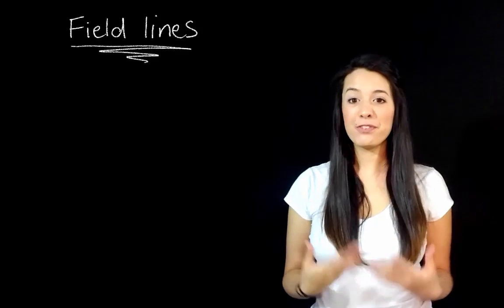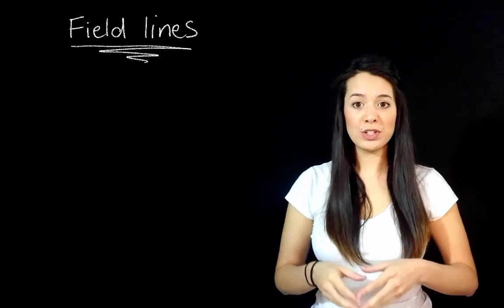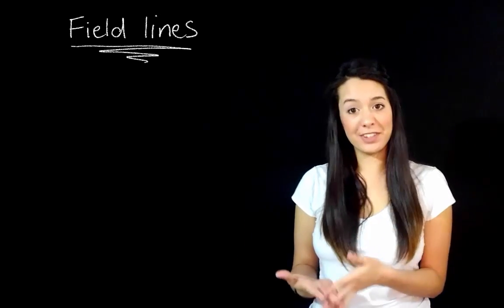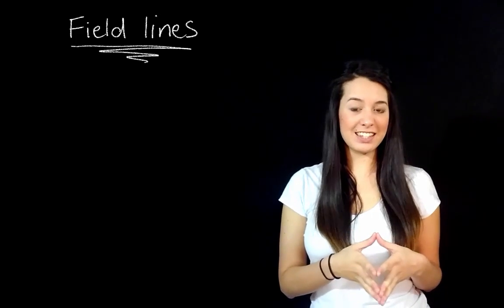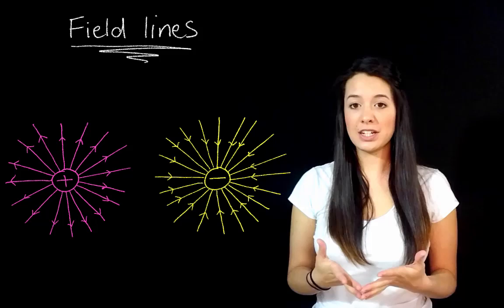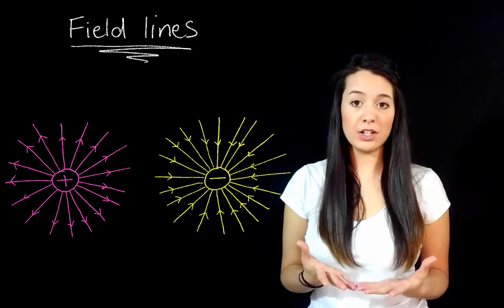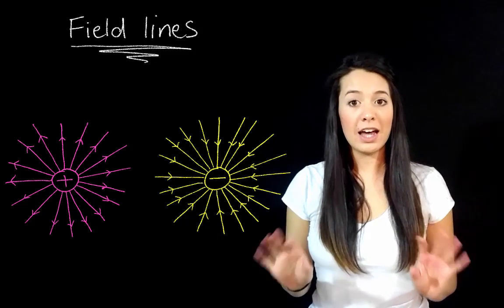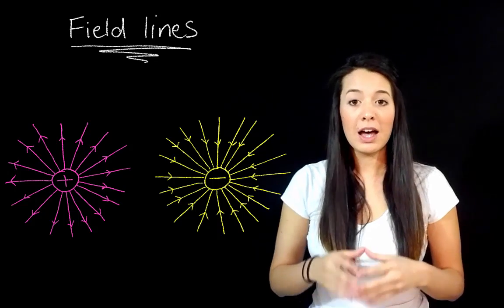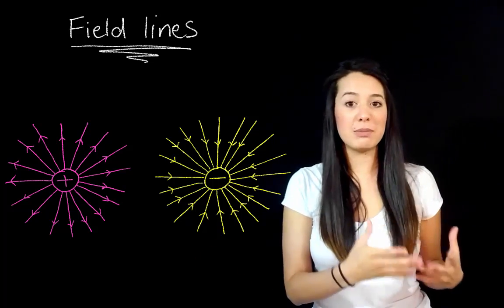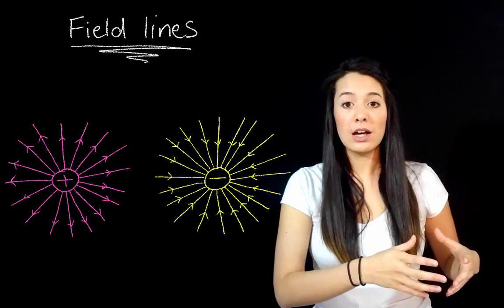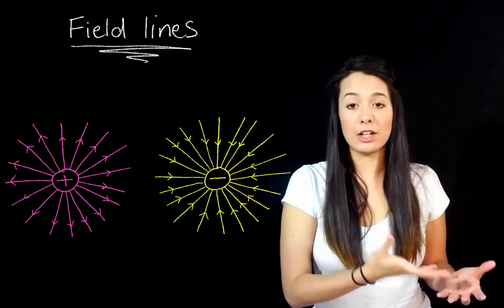Some kind of lines of the field? Right! Field lines! So field lines were an idea that were introduced just to help us visualize what was going on with an electric field. They're actually pretty useful and they look something like this. So by convention, the arrows of a positive charge are pointing out and the arrows of the negative charge are pointing in.